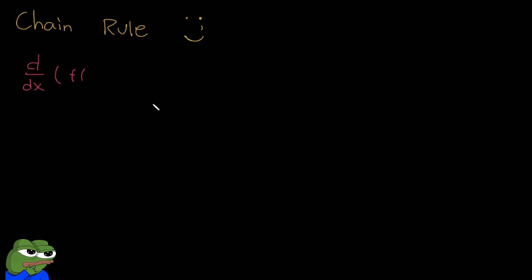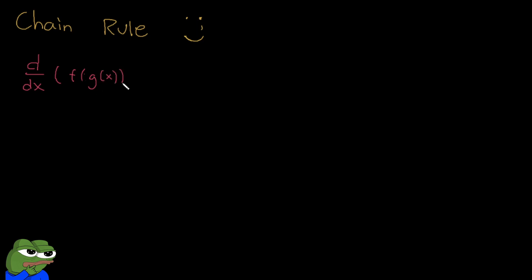Now for the last rule, we're going to learn chain rule. For me, this is kind of the hardest one. Chain rule is applicable when we're dealing with composite functions — those are functions inside functions. Normally we look at f of x, and its derivative is straightforward. But what if we input into f of x another function, like g of x? The derivative of this composite function is just the derivative of the outer function multiplied by the derivative of the inner function. That's basically chain rule.